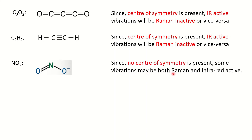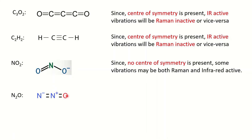N2O is a linear molecule. You should be aware of its shape. The center is nitrogen, but if you move in one direction you meet nitrogen, and in the opposite direction at an equal distance you meet oxygen — a different atom. So we can say N2O does not possess a center of symmetry.